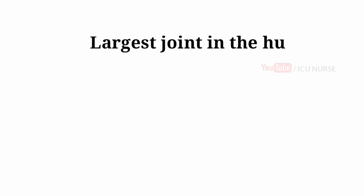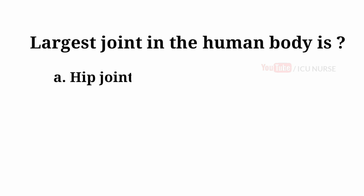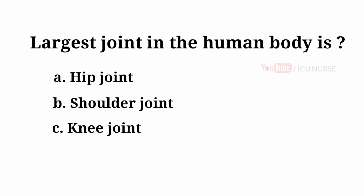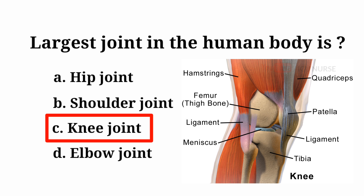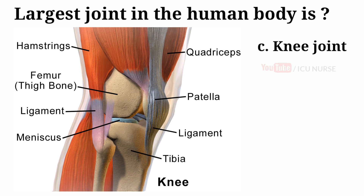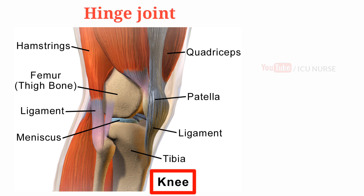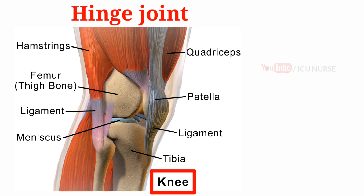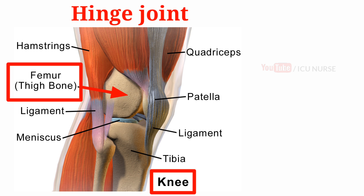Largest joint in the human body is: A. Hip joint, B. Shoulder joint, C. Knee joint, D. Elbow joint. And the answer is C. Knee joint. The largest joint in the human body is the knee joint — a hinge joint consisting of 3 parts. The lower end of the thigh bone (femur) rotates on the upper end of the shin bone (tibia), and the knee cap (patella) which slides in a groove on the end of the femur.